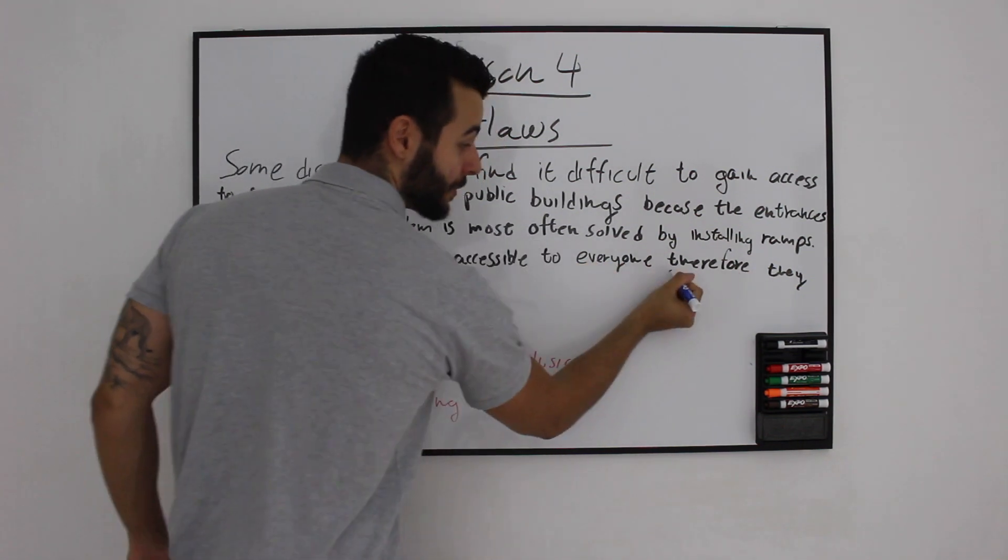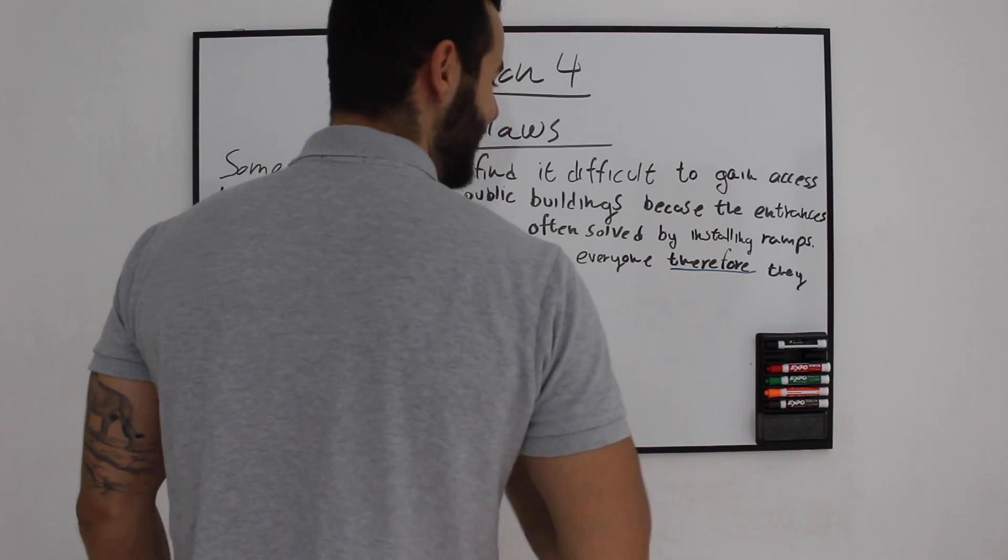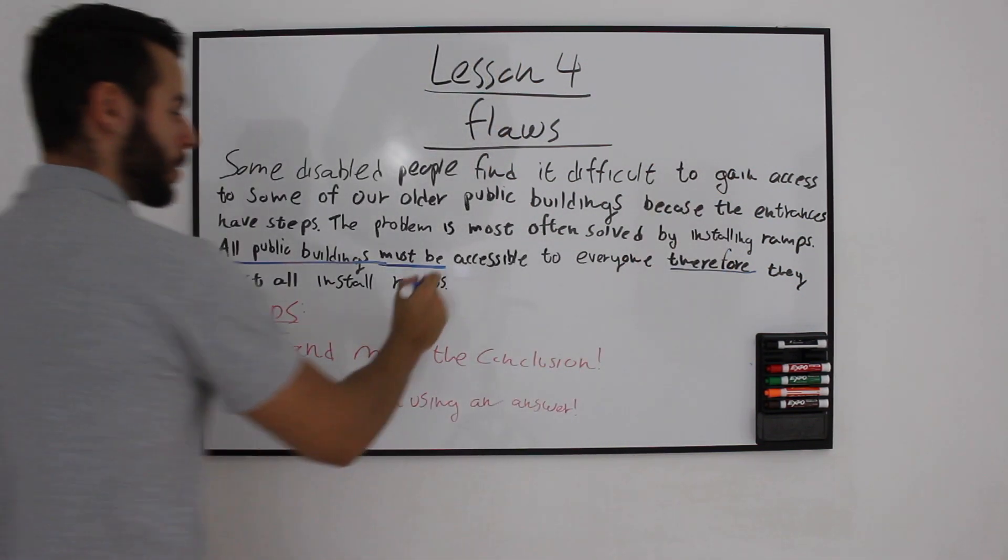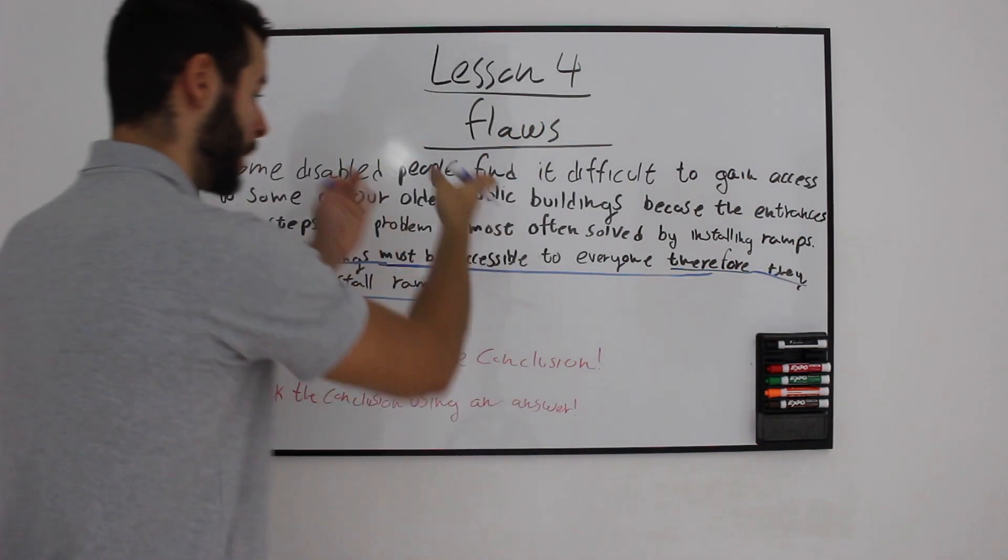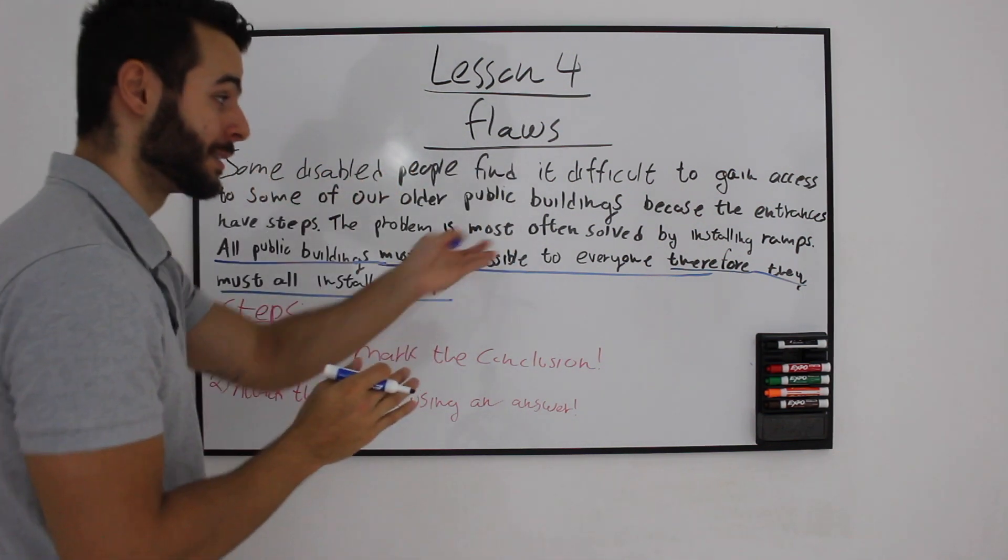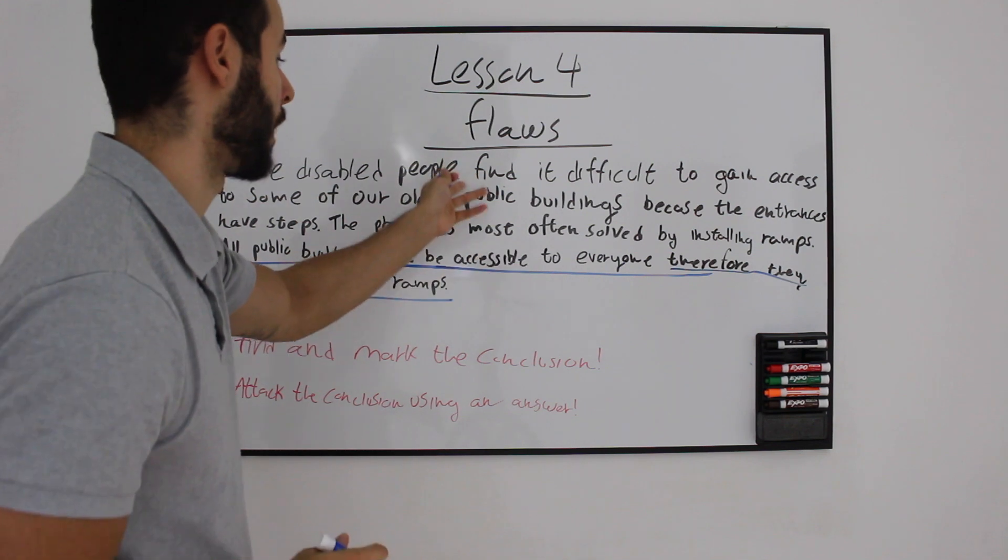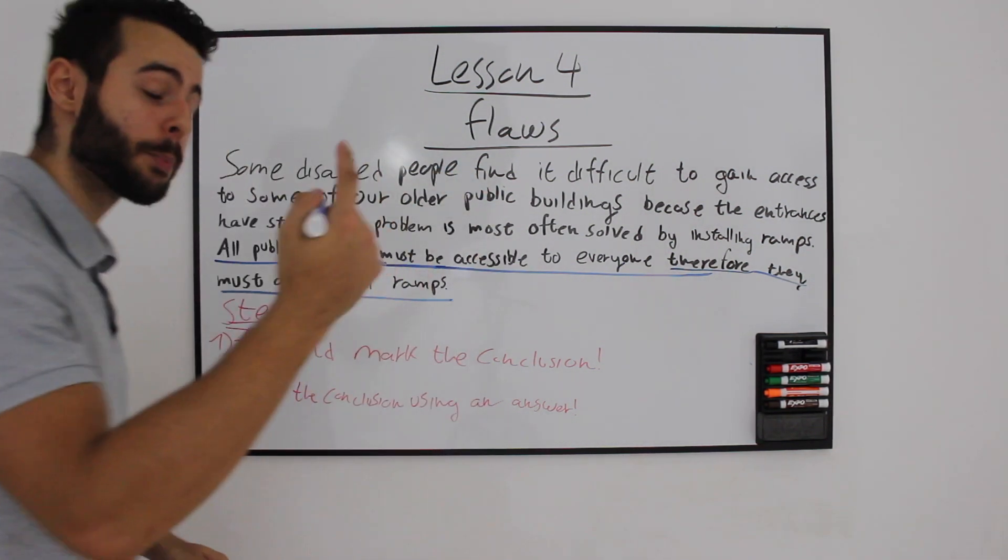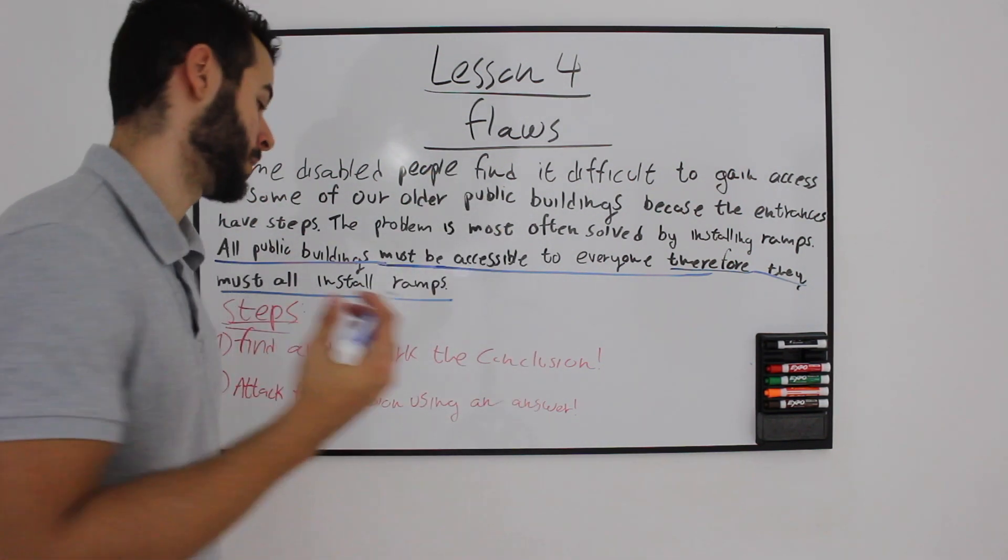All public buildings must have accessible to everyone. Therefore, we have another bulb lighting type of word. They must all install ramps. So, we have a conclusion, we have a problem, and we have a solution to the problem. The solution is always your actual conclusion to the problem, especially in those short paragraphs. Step one, find and mark the conclusion. We did it.